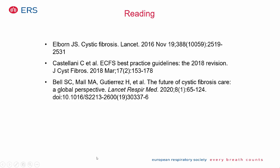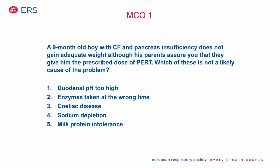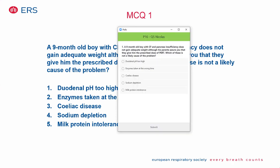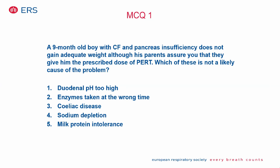MCQ: A 9-month-old boy with CF and pancreatic insufficiency is not gaining adequate weight despite enzyme administration. Which is NOT a likely cause? The answer is that an alkaline duodenal pH is not a cause — the problem is the opposite: an acidic duodenum prevents the enzyme pellets from dissolving. Enzyme timing errors, celiac disease, sodium depletion, and milk protein intolerance are all valid causes.